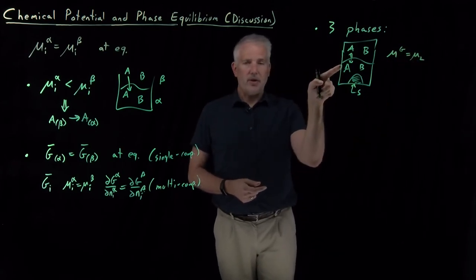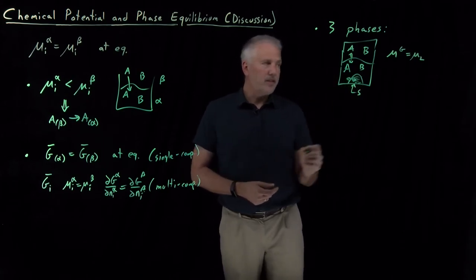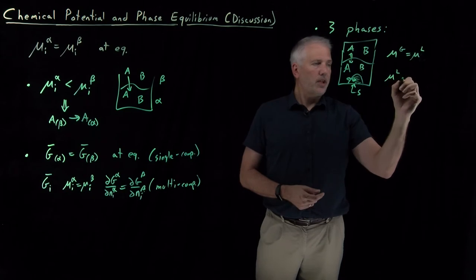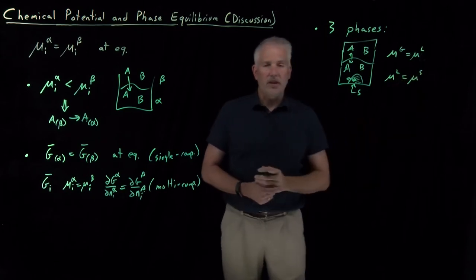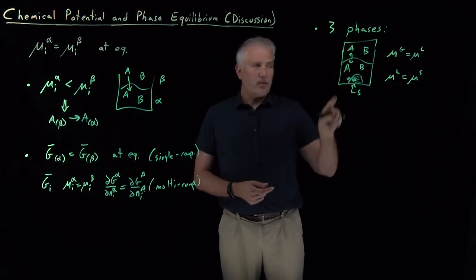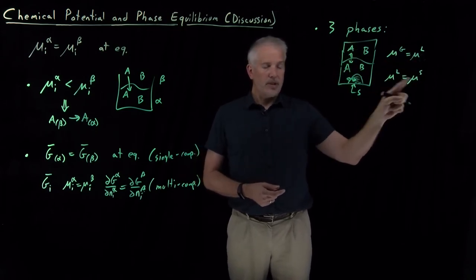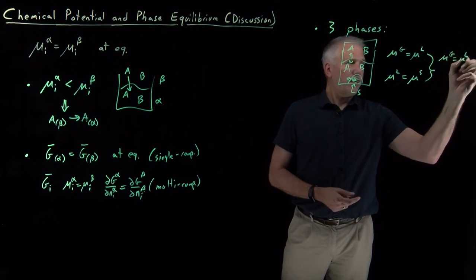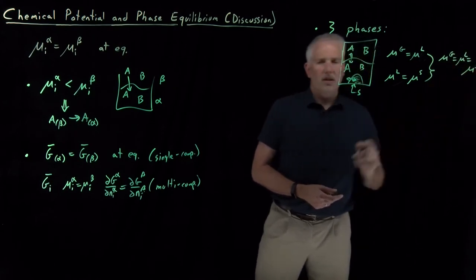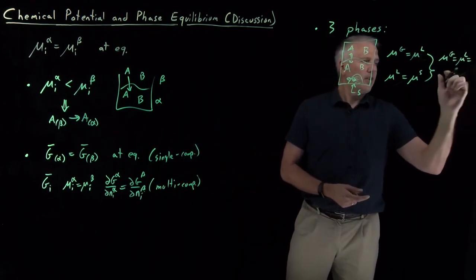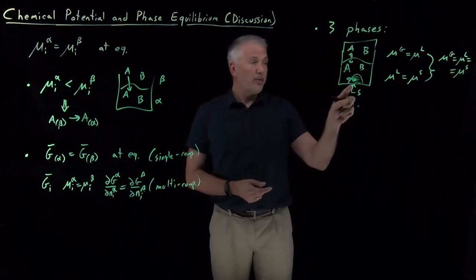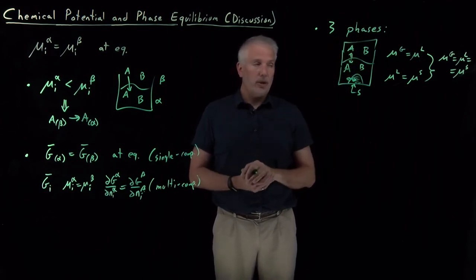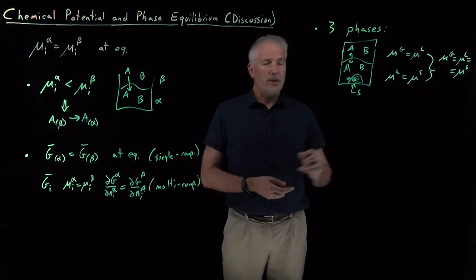At the liquid-gas interface, the equilibrium requirement means the chemical potential in the gas phase equals the chemical potential in the liquid phase. At the liquid-solid interface, the chemical potential in the liquid equals the chemical potential in the solid. And even though the solid is not in direct contact with the gas, if gas equals liquid and liquid equals solid, then gas, liquid, and solid all have the same chemical potential as each other, even though the solid and gas are not directly in equilibrium.